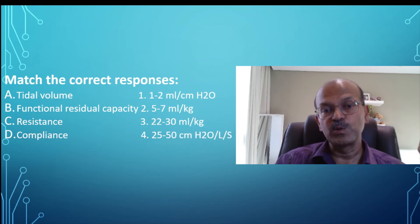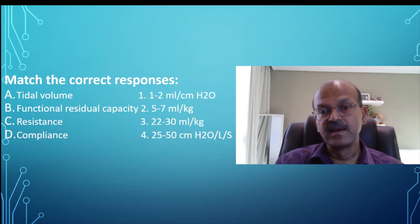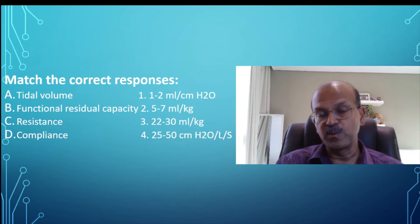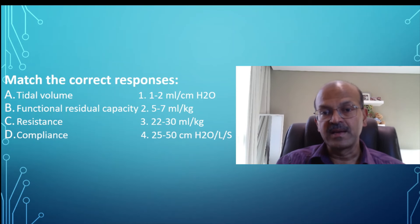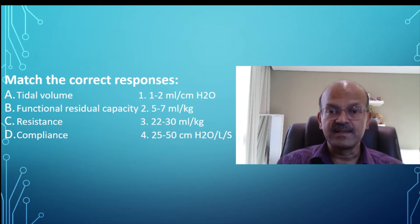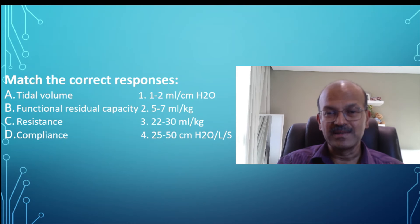The normal compliance is 1 to 2 ml per centimeter water. In an RDS baby where there is low compliance, the compliance may go below one, and the ventilators may reflect this as well. I hope this information is helpful — do share and please like the video as well. Thank you.